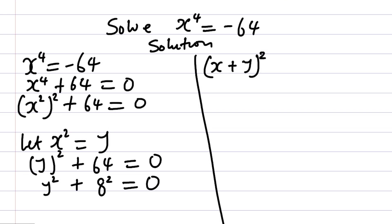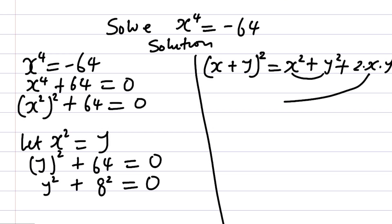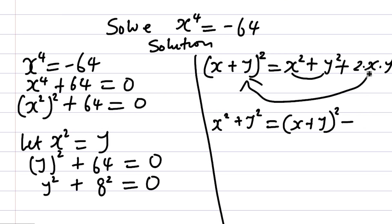There's something I want to show you. If you have (X + Y) all squared, opening the bracket gives you X squared plus Y squared plus 2XY. So if I want X squared and Y squared to stay alone, I rearrange: X squared plus Y squared equals (X + Y) all squared minus 2XY.